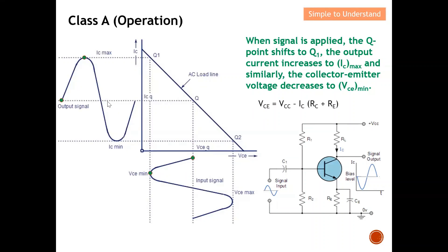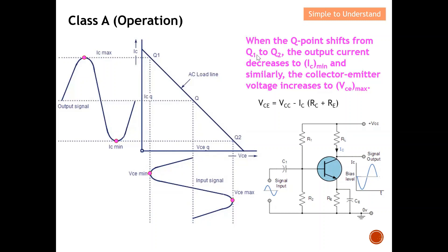Next, when the Q point shifts from Q1 to Q2, the output current decreases to IC minimum. As you can see, this point represents IC minimum. Similarly, the collector-emitter voltage increases to VCE max. If you trace it here, they reach VCE max. Again, this is governed by the same equation — when the collector current is at minimum, VCE will be at maximum.